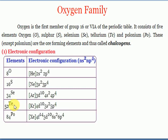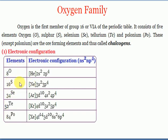One important point: selenium, tellurium, and polonium are available in the form of metal sulfides. Oxygen and sulfur are non-metals; selenium and tellurium are metalloids; and polonium is a metal. So in this oxygen family, metals, non-metals, and metalloids are all included.